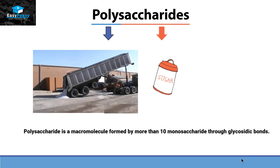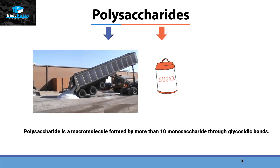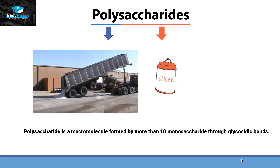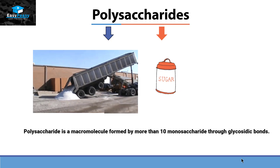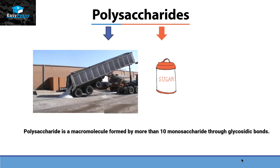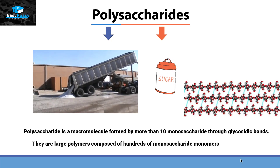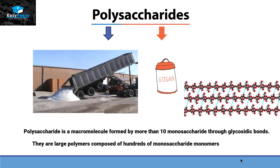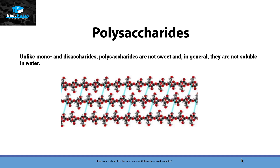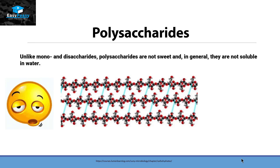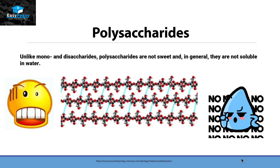This definition is not a hard and fast rule because even if we have 25 residues of monosaccharides linked together by glycosidic bond, it can come under oligosaccharide. So in short, polysaccharide is a polymer which has hundreds and hundreds of monosaccharide units. Unlike mono and disaccharides, polysaccharides are not sweet in nature and in general they are not soluble in water.